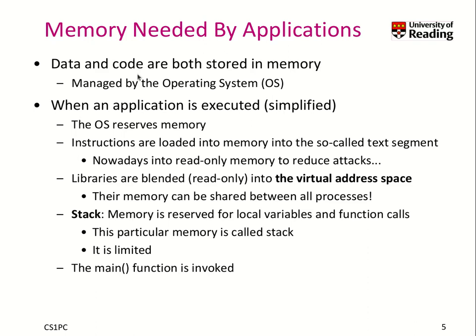Why do we need memory for applications? We know that data and code are both stored in memory in our von Neumann architecture, and both need to be managed by the operating system so that you can run multiple applications at the same time. When you execute an application, the operating system first reserves some physical memory, then these instructions get loaded into memory — what we will later call the text segment. This text segment is typically read-only to prevent people from manipulating the code and changing the way your application behaves, which is a security problem. Hackers in the past modified the code of applications to make them perform malicious activities.